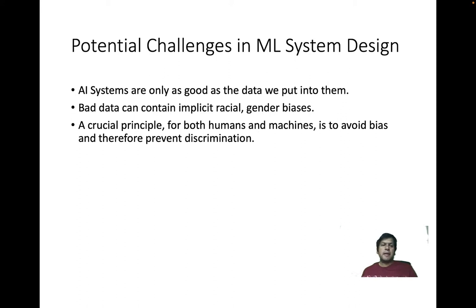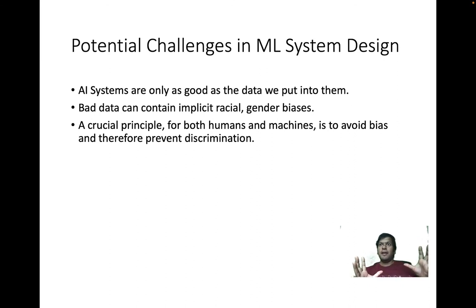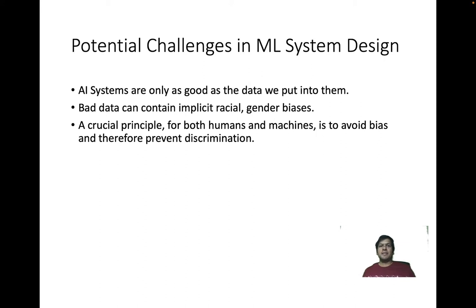Bad data may express implicit racial or gender biases — this is very alarming. If the dataset contains stories that undermine a specific age group, and you feed that data into a machine learning system to make decisions about future outcomes, you cannot expect the model to be impartial. That's one of the critical and alarming issues in machine learning system design.